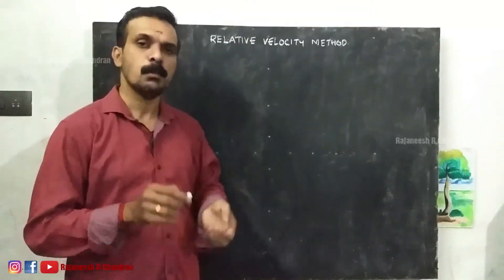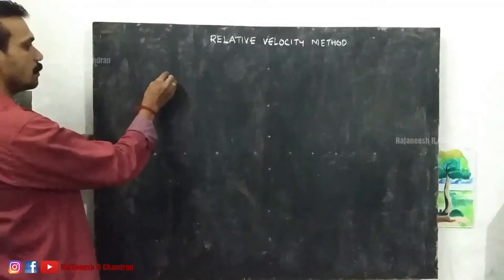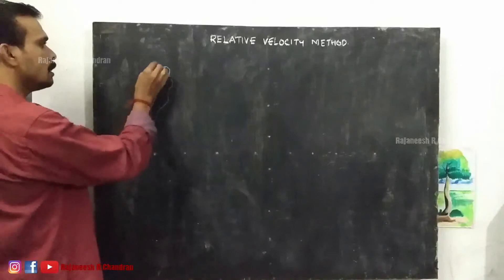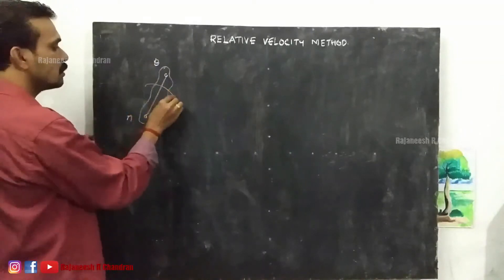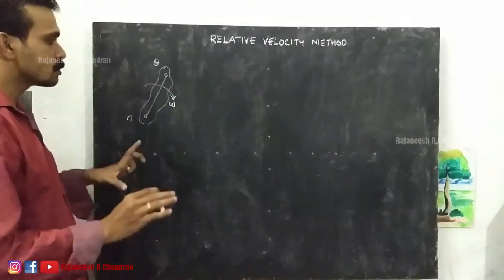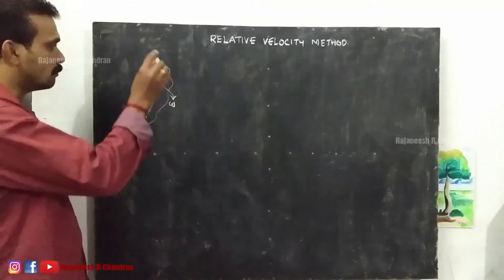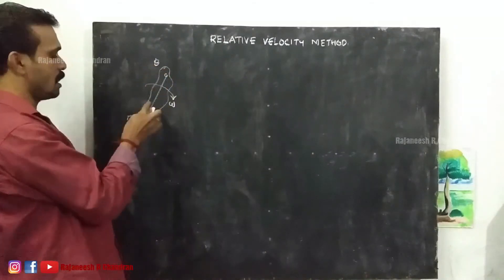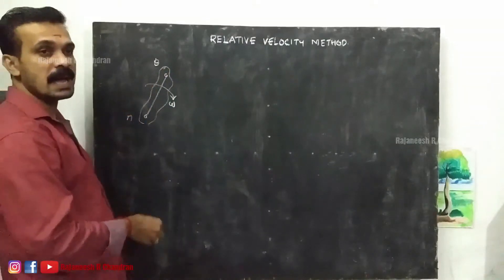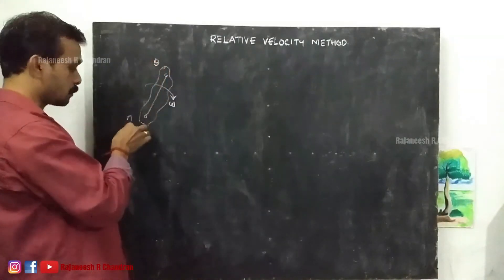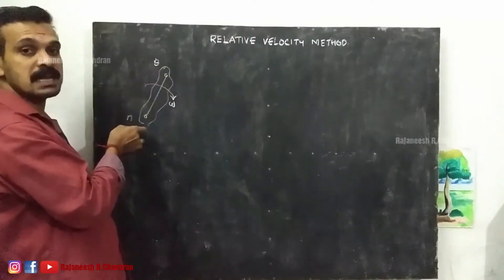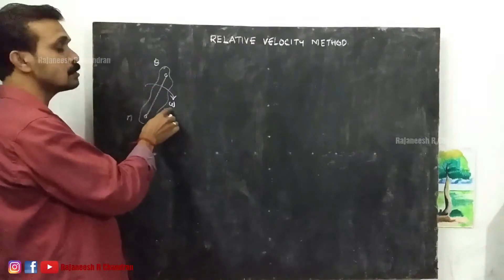Now, consider the motion of a link. Assume a link A-B. This is a link A-B which is rotating with an angular velocity omega in the clockwise direction. The velocity of point B with respect to A will be a line perpendicular to the line connecting B and A, in the sense of omega.